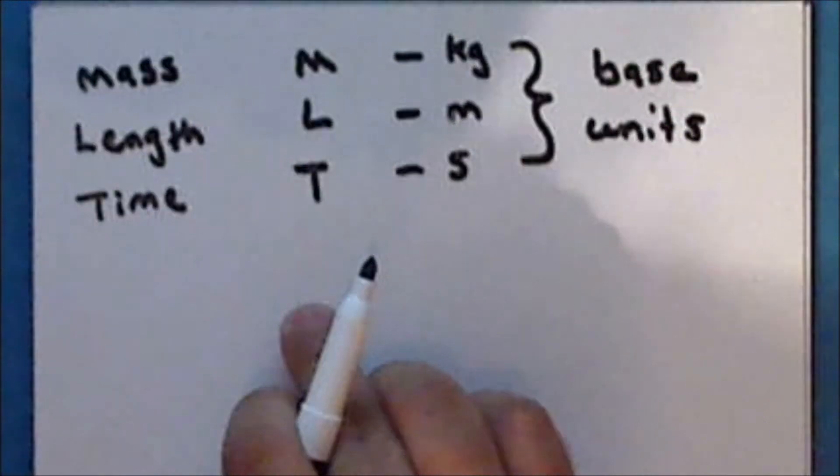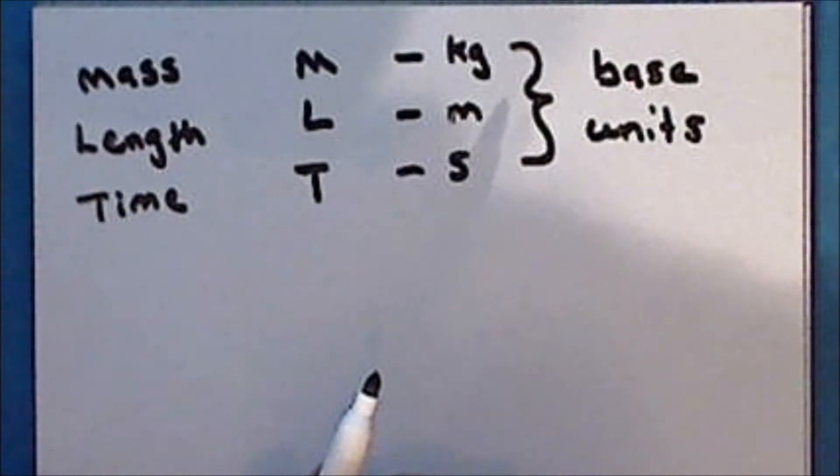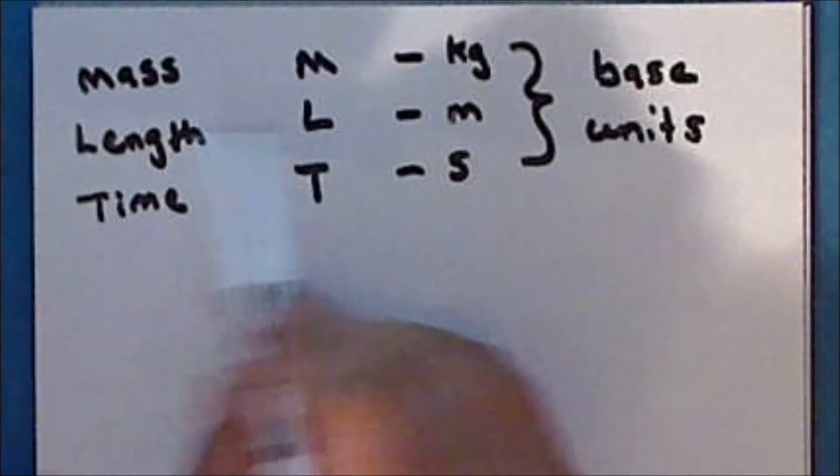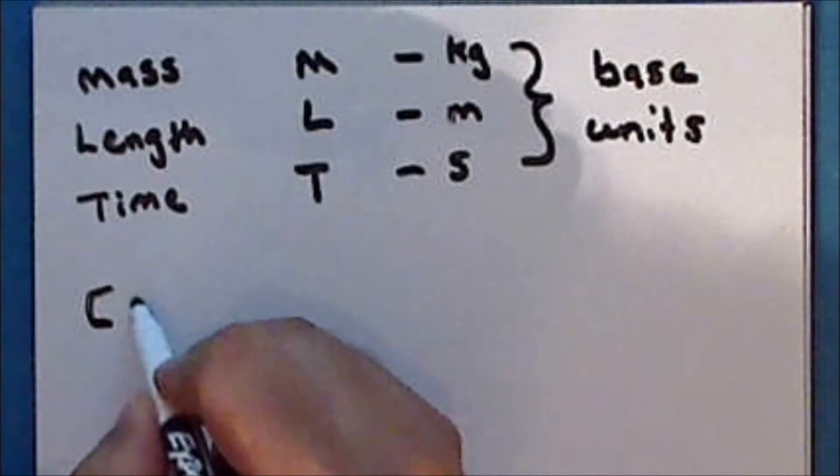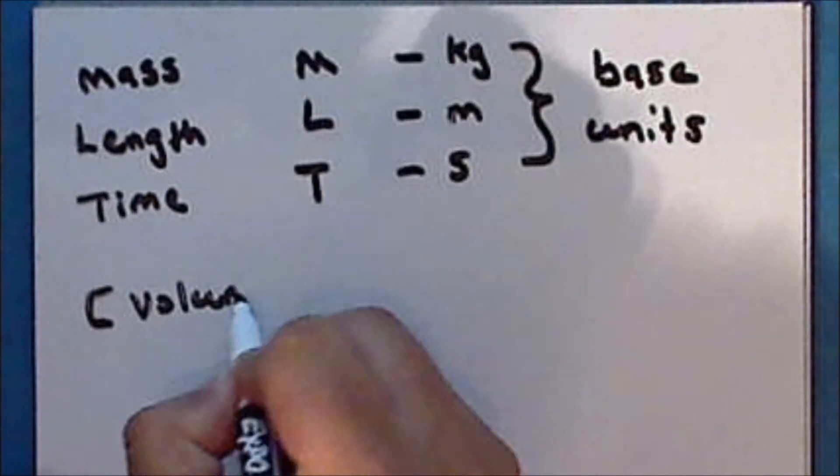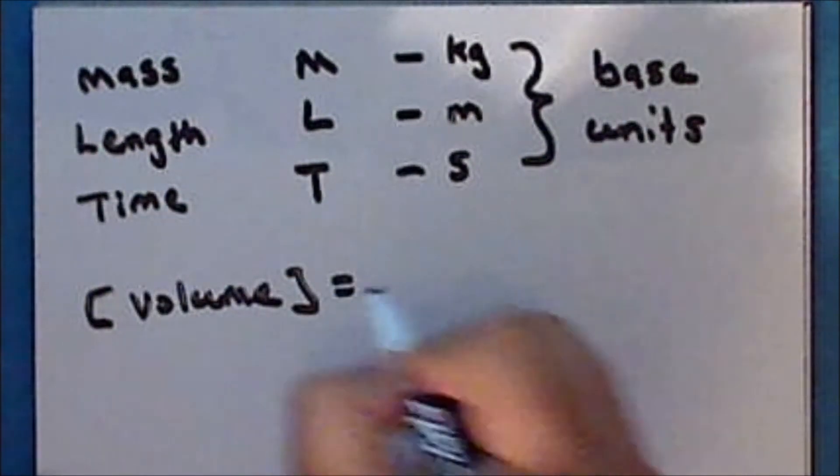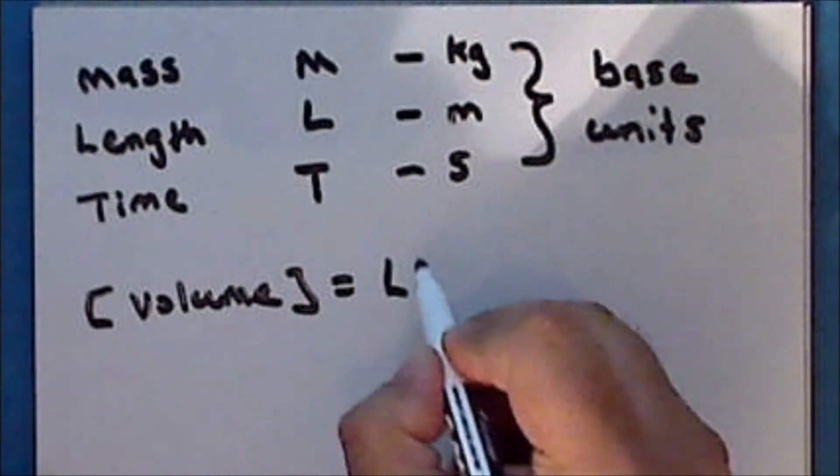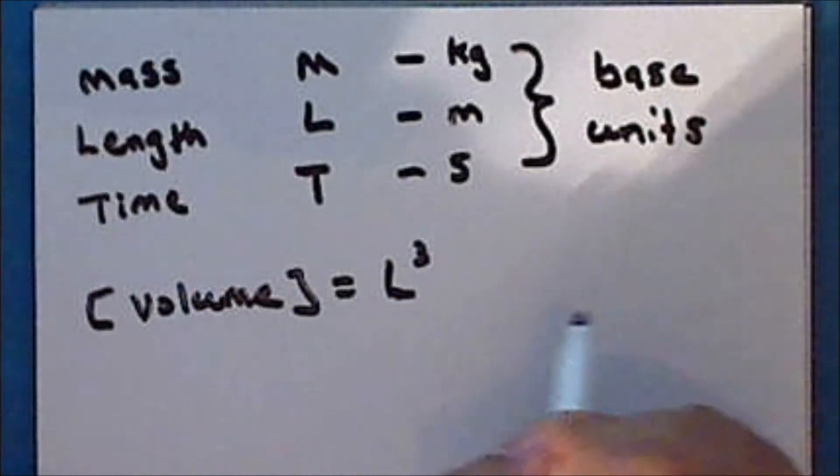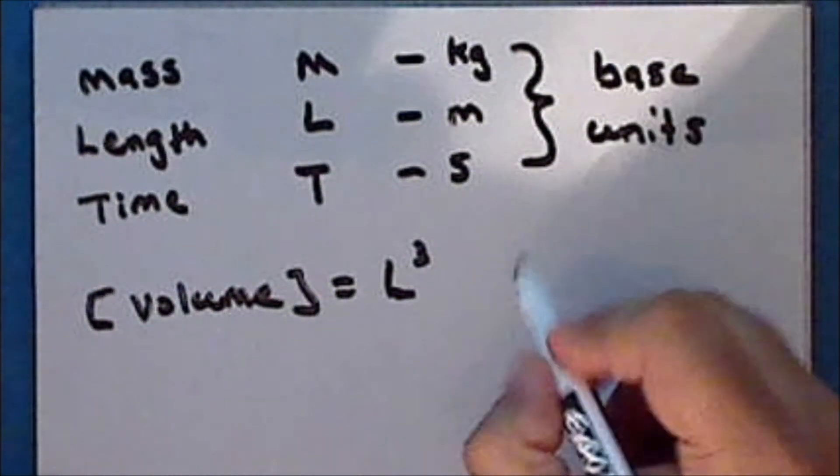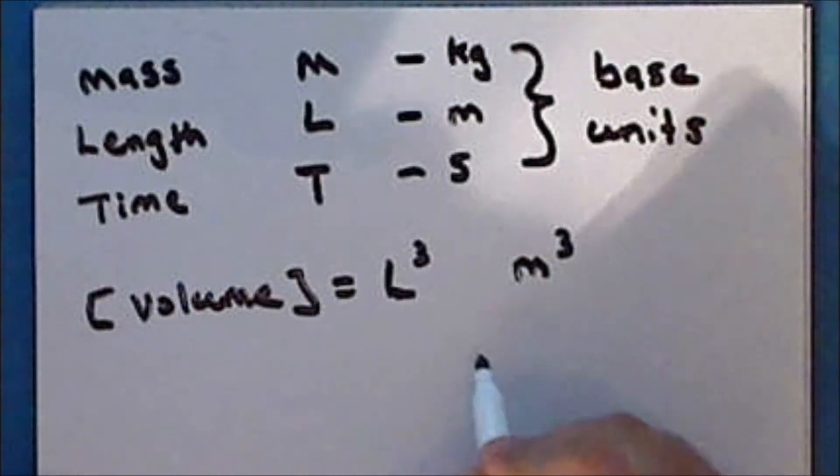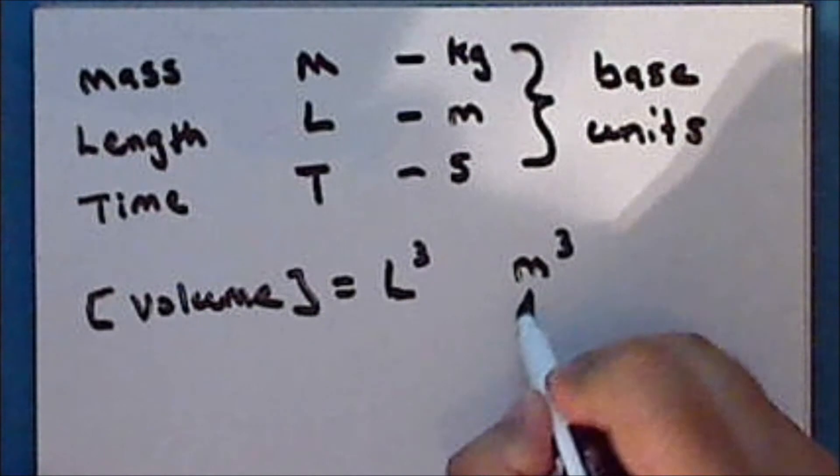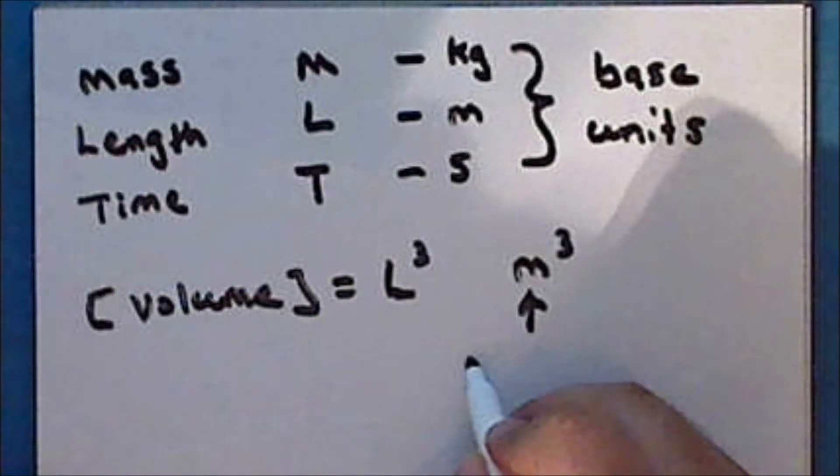Now, every other physical quantity that we will measure or calculate will be defined in terms of these fundamental units. For example, volume has dimensions of length cubed, so that the standard unit for volume is the cubic meter. And we refer to this as a derived unit.